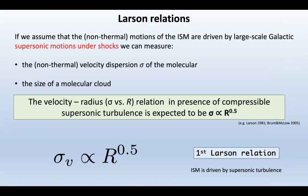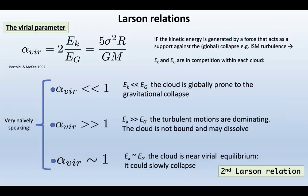There are three important Larson relations. The first Larson relation: if you have supersonic turbulent motions, you expect a power-law where velocity dispersion scales with cloud radius, with an exponent of about 0.5 — meaning larger clouds have larger velocity dispersions. The second parameter is the virial parameter α, essentially the ratio of total kinetic energy to total gravitational energy of the object.